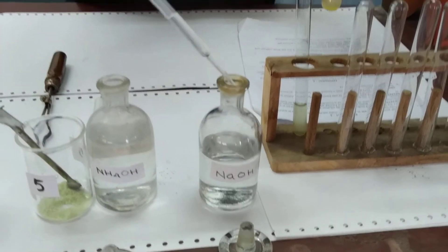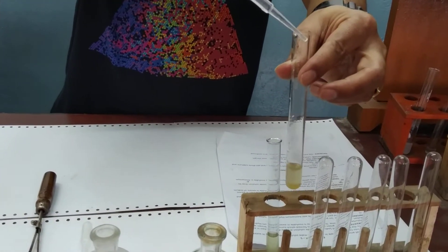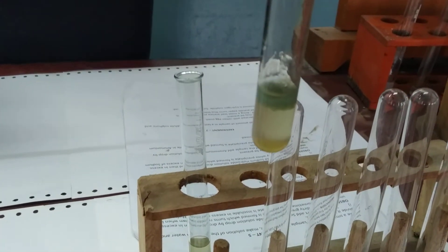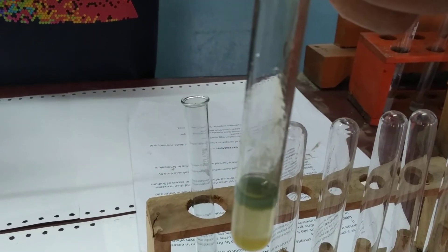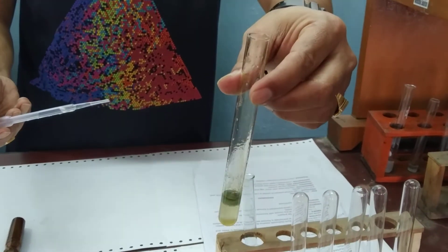You can observe what happens. A dirty green precipitate is formed, which turns reddish brown after some time if you keep it undisturbed.